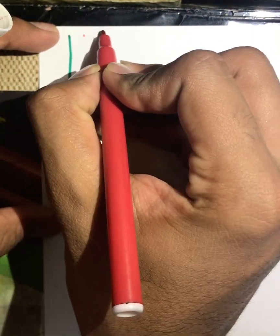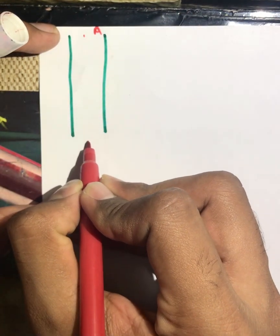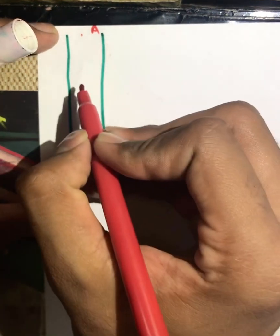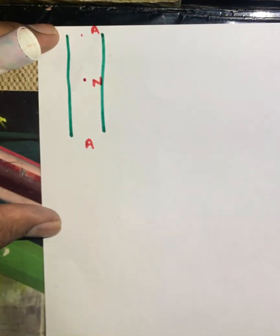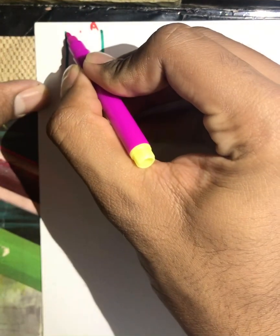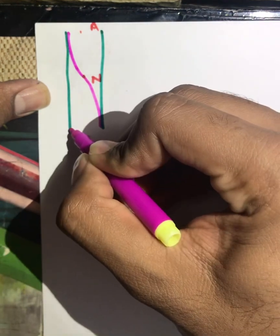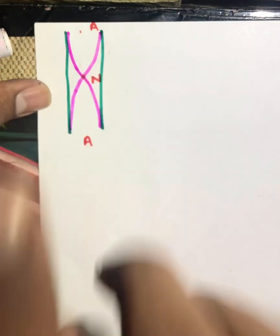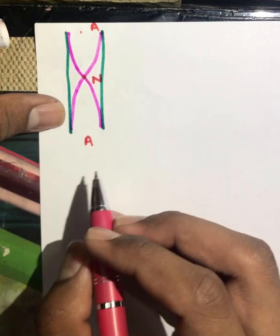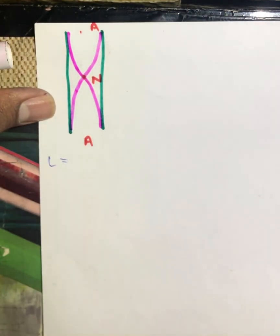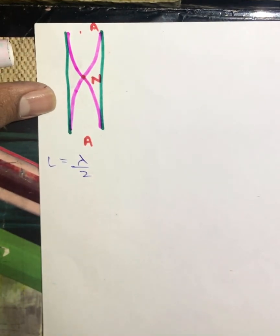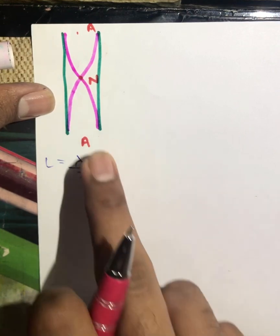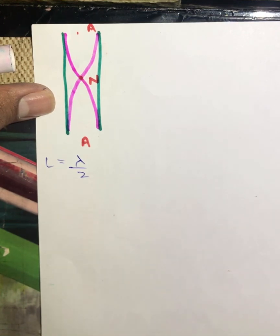As mentioned in the earlier video, at the open ends we will always get anti-nodes. So at both open ends we will always get an anti-node. Now let's assume that there is only one node taking place in the open pipe and draw the stationary wave for this condition. Since the pipe is open at both ends we get anti-nodes at the two ends. The length of this pipe equals λ/2, since two half-loops combine to make one complete loop forming half a wavelength.